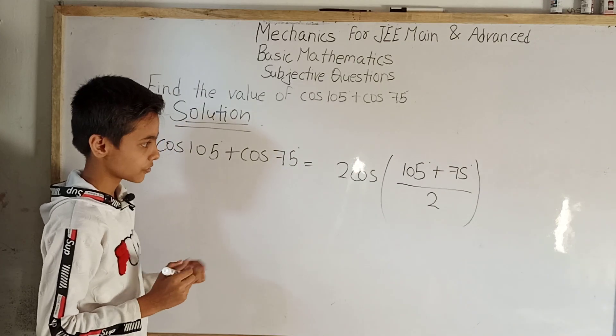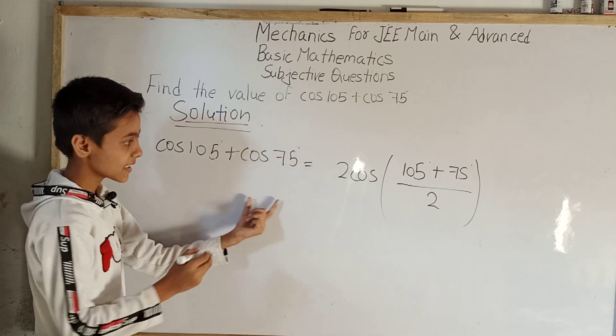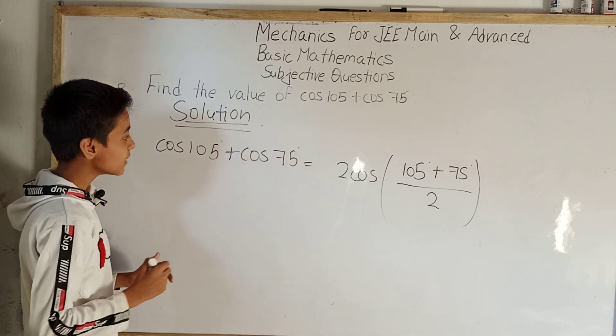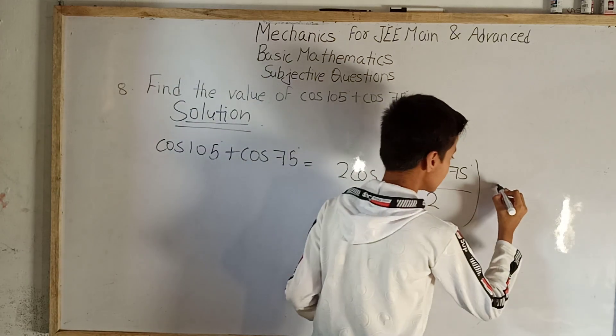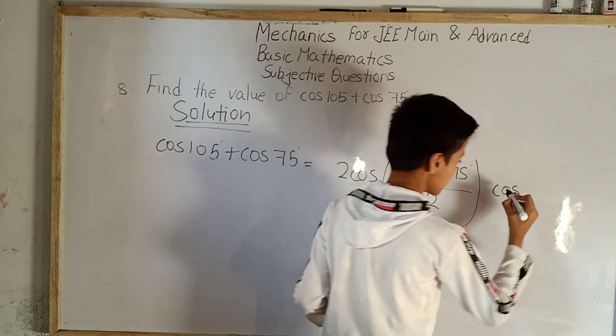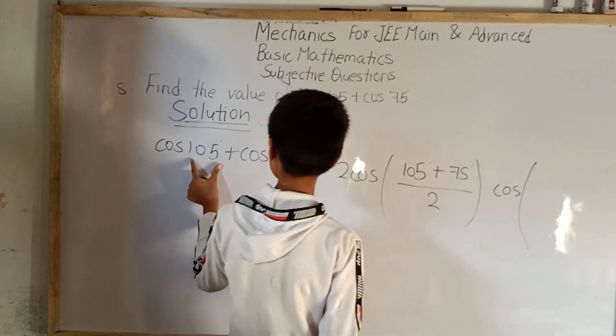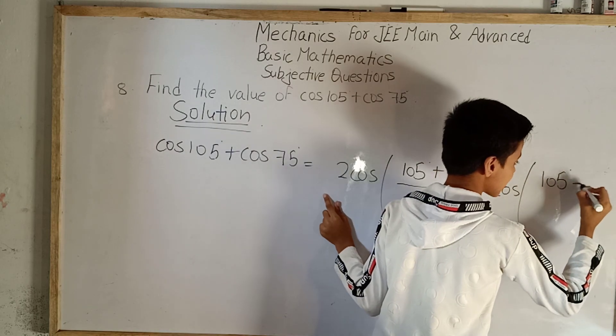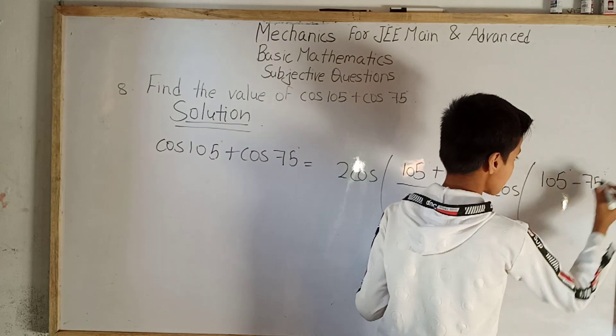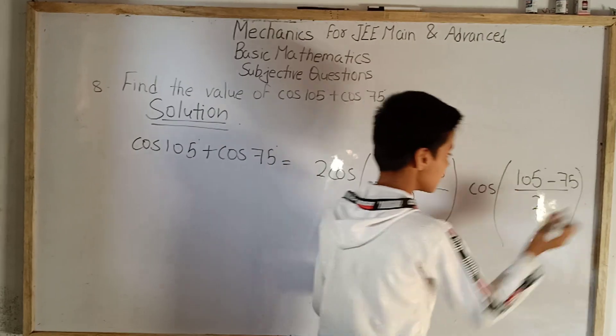Now what we have to do is multiply one more number. We will take cos here. So into cos, now another bracket. We will subtract them: 105 degree minus 75 degree, then reduce them to half, so divided by 2.